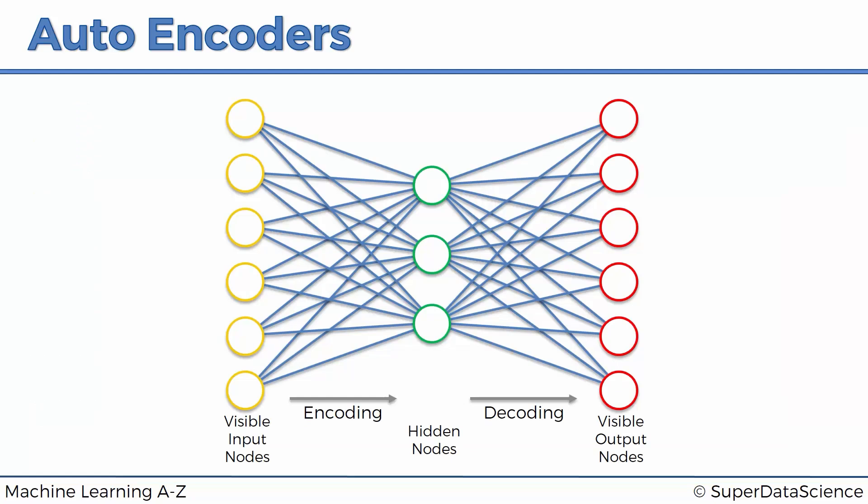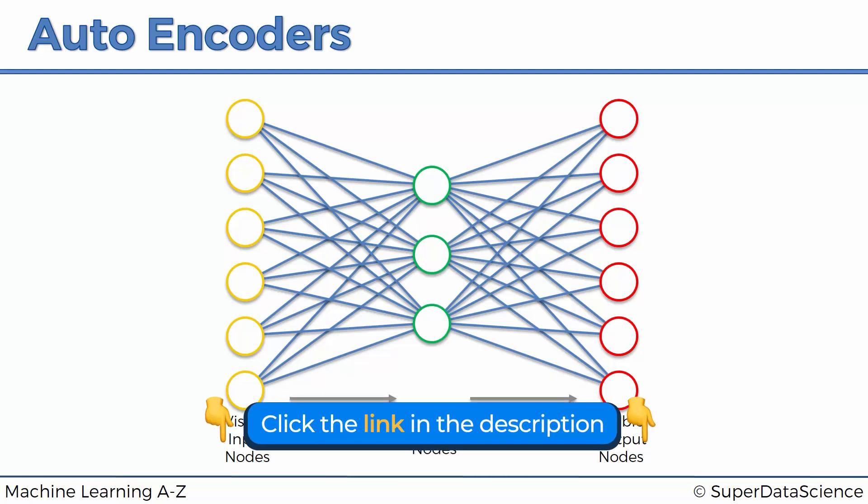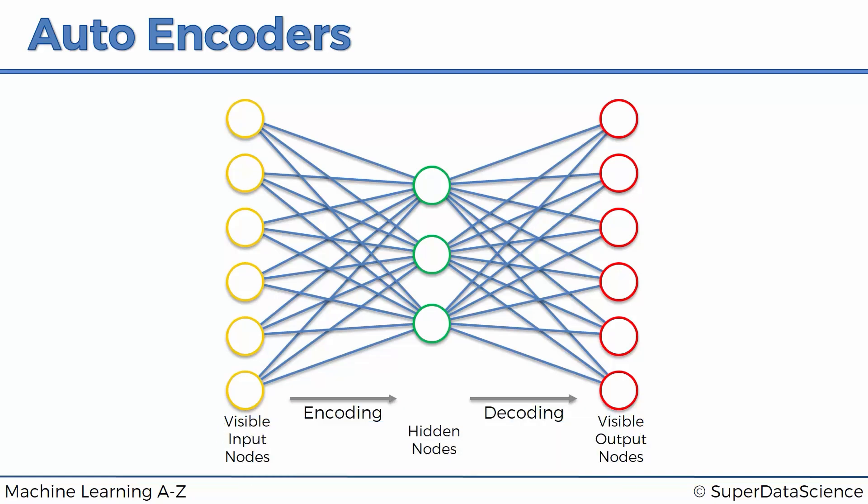And right away by the colors you can tell the good news that we're back to the directed types of neural networks. And this is a directed type of neural network. The blue lines don't have arrows on the ends but we'll just agree that it is a directed type of network and everything's moving from left to right.